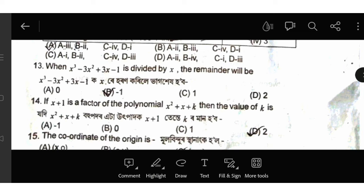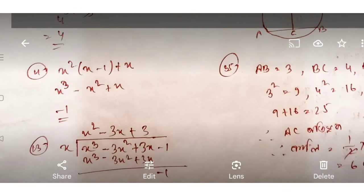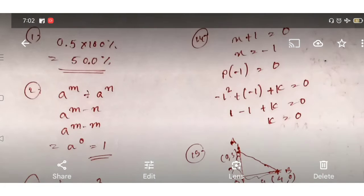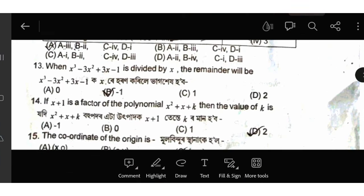If x plus 1 is a factor of the polynomial x squared plus x plus k, then the value of k is: x plus 1 equals 0 means x is minus 1. We call k: if x is minus 1, substitute into the polynomial. x over negative 4 to minus 1. We need minus minus 1. If the result is negative minus 1, cancel minus 1. Therefore the value is 0.